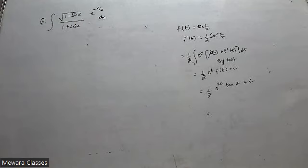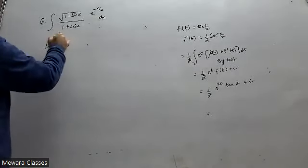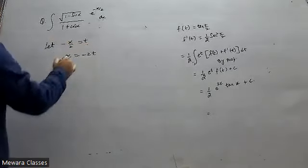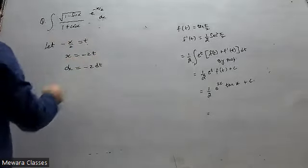Integral of 1 minus sin x, e to the power minus x by 2, upon 1 plus cos x dx. Assume minus x by 2 equals t, so dx equals minus 2 dt.